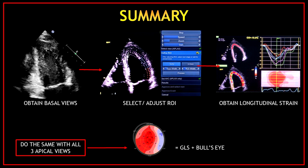Here is a summary of the protocol. First, obtain your apical two-chamber, four-chamber, and three-chamber views. Then select the correct view and the region of interest, using the blue menu on your right-hand side to manually adjust anything you're not happy with. Once you process and approve your selections, you will obtain the longitudinal strain of that view. Do the same with all three apical views and you will obtain the global longitudinal strain and the bullseye. Remember, the more you do this, the easier it will be — it's all about practice.